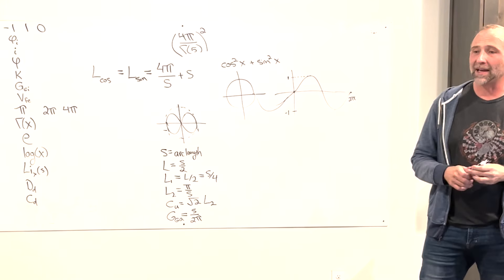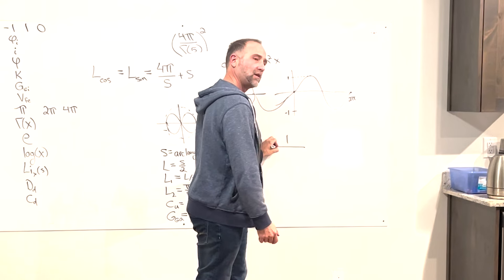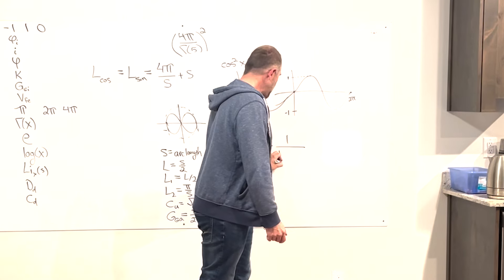The golden ratio itself defines the unitary continued fraction — the continued fraction whose elements are all ones, all the way down: 1 plus 1 over 1 plus 1 over 1 plus... and so on. The whole thing equals the golden ratio. The continued fraction form is related directly to all sinusoidal spirals, and there's a recursion heavily based on the symmetry between π and L.